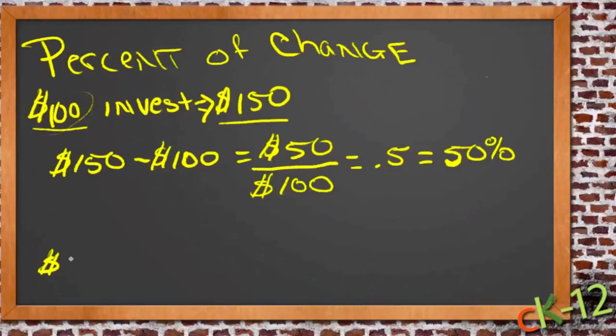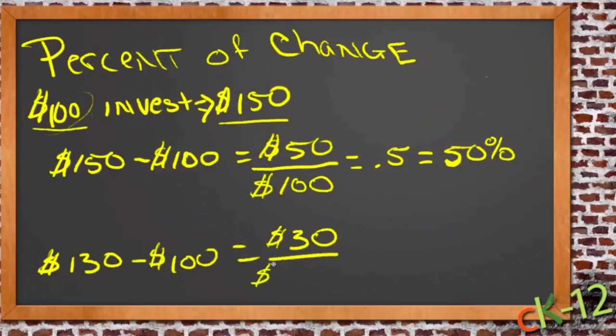Now if we had, say, $130 is what we took out instead of $150, $130 minus $100 would say that we profited $30. $30 divided by our initial investment of $100 is .3, which is equal to 30%. So if we invest $100 and get $130 back, then our profit is $30, which represents 30% of the initial investment.